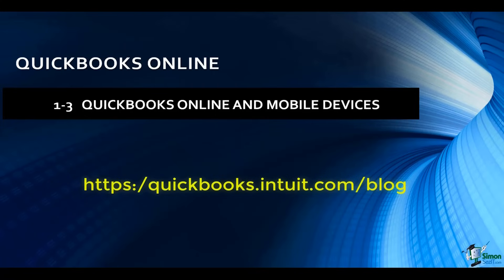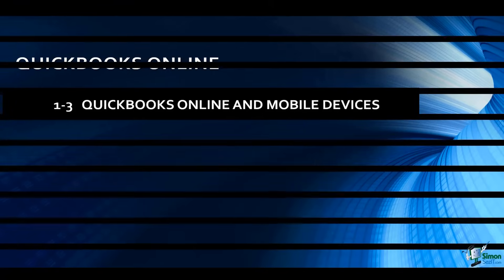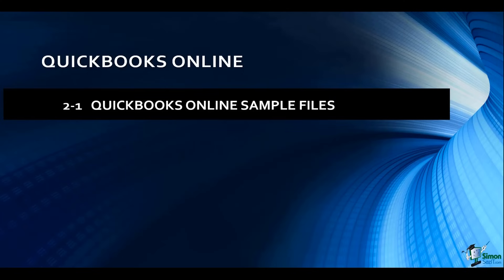That wraps up module one. Now let's jump into module two and start talking about working with company files. Anytime you create a file in QuickBooks it is called a company. You can have as many companies as you'd like. Often a small business owner might set up one company with personal information and another with business information. Company files do not talk to each other — you don't have to worry about data getting mixed up. You can either create a brand new one or, if you already have the desktop version of QuickBooks, upload your file to the online version.